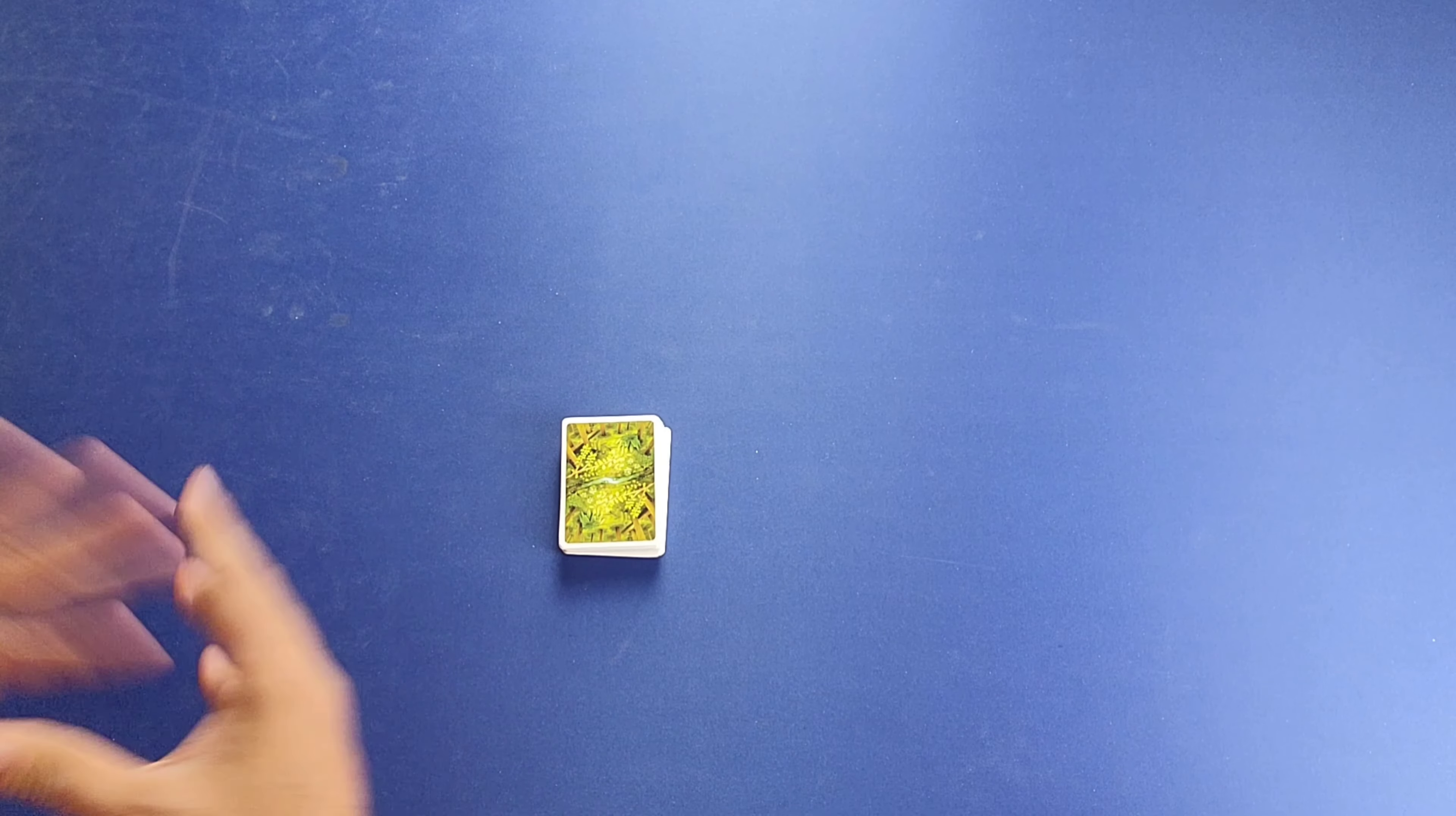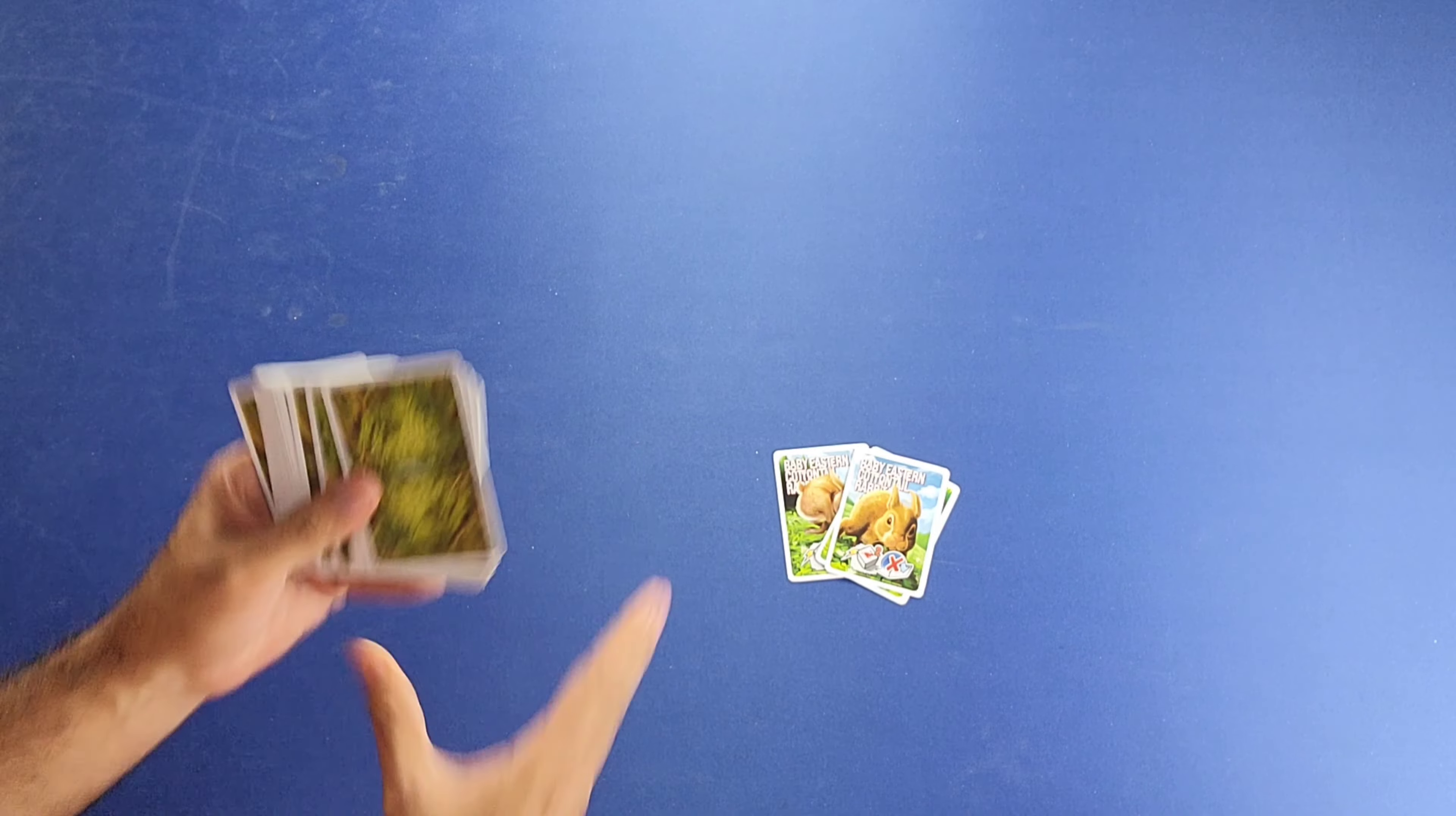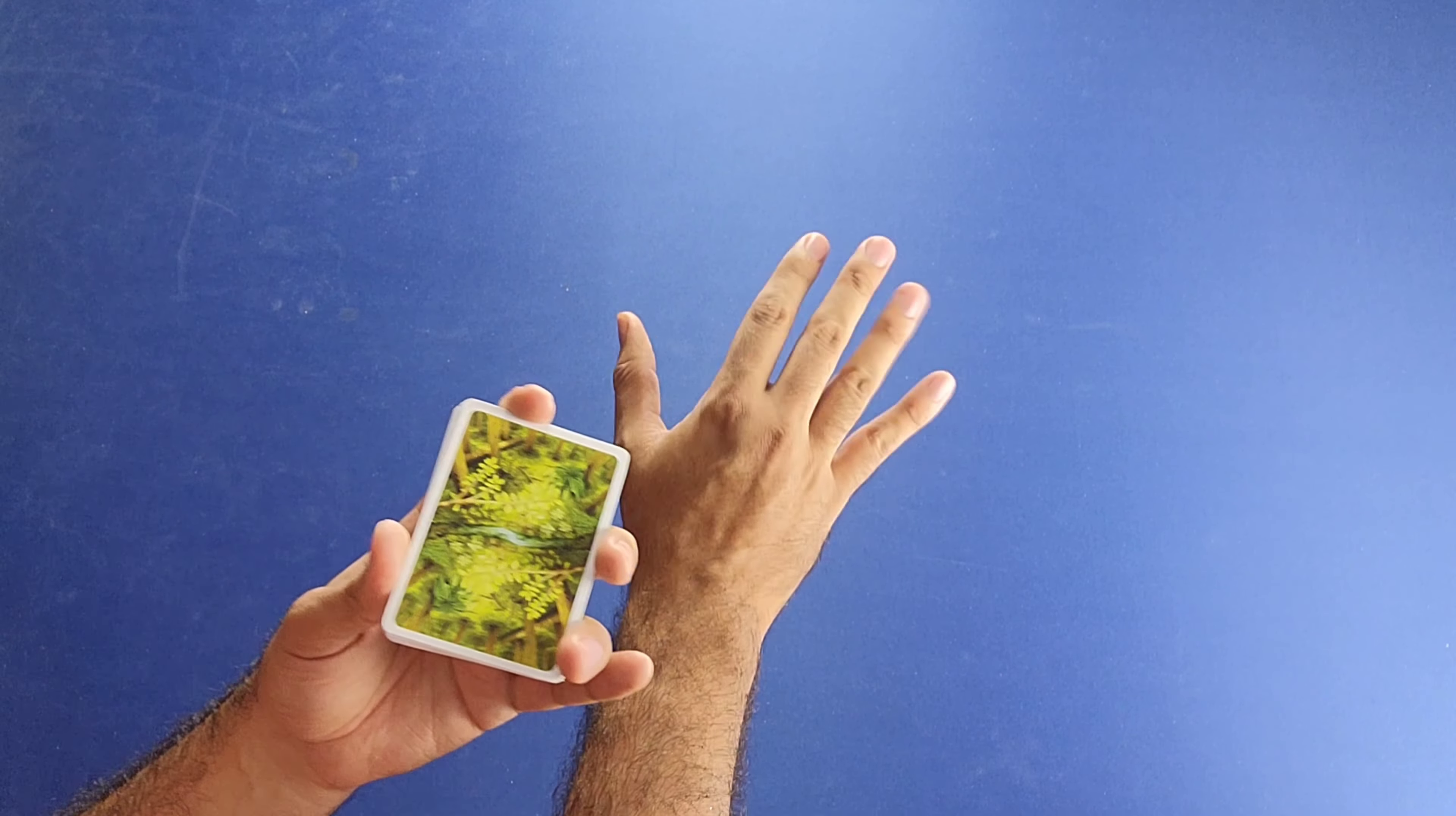For setup for this forest floor variant, you're going to start by locating and identifying the three Baby Eastern Cottontail Rabbit cards. There are three of these, and you're going to set these aside. Then you're going to shuffle the remaining cards in the deck. Once you're done shuffling, you will draw 21 more cards. You will shuffle those 21 cards along with the three Baby Eastern Cottontail Rabbit cards. And now you'll have a 24-card deck from which you will create a 6x4 grid, which will be your playing area.